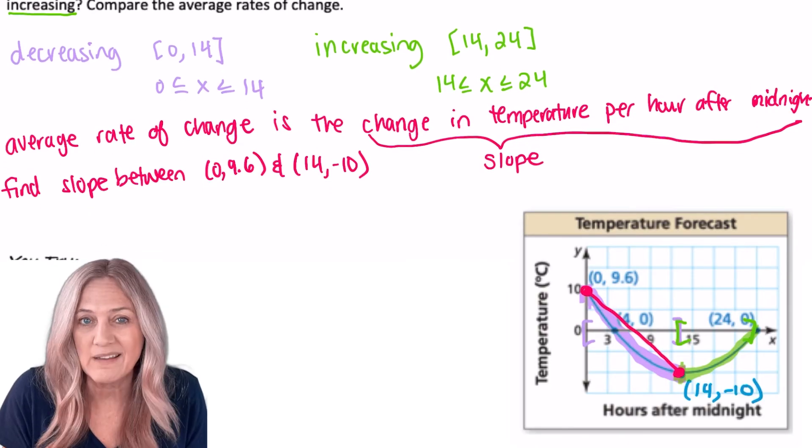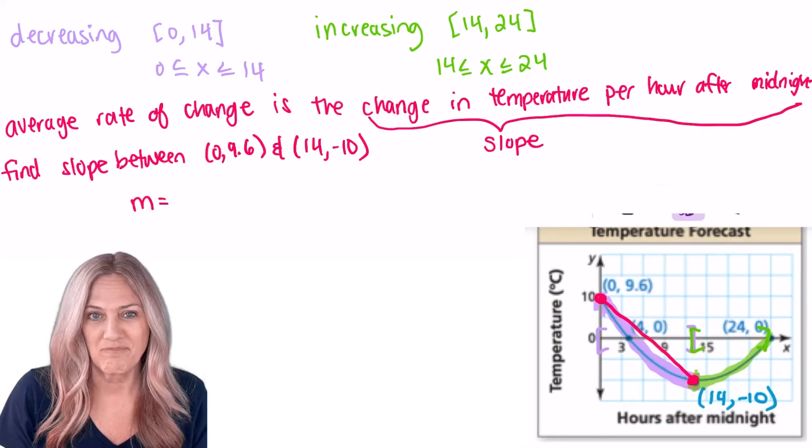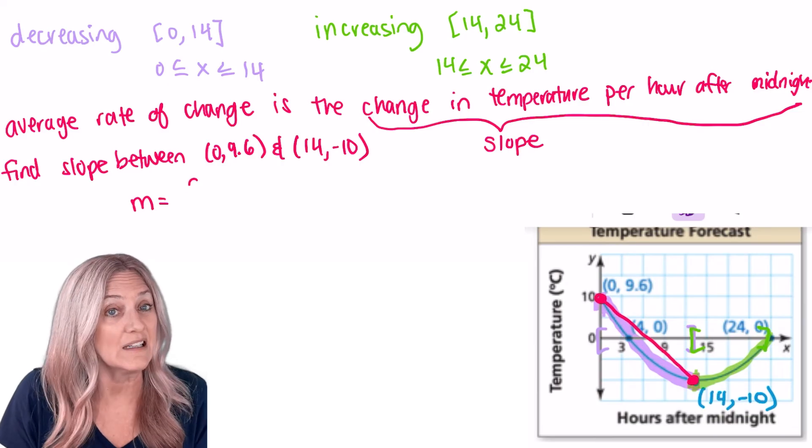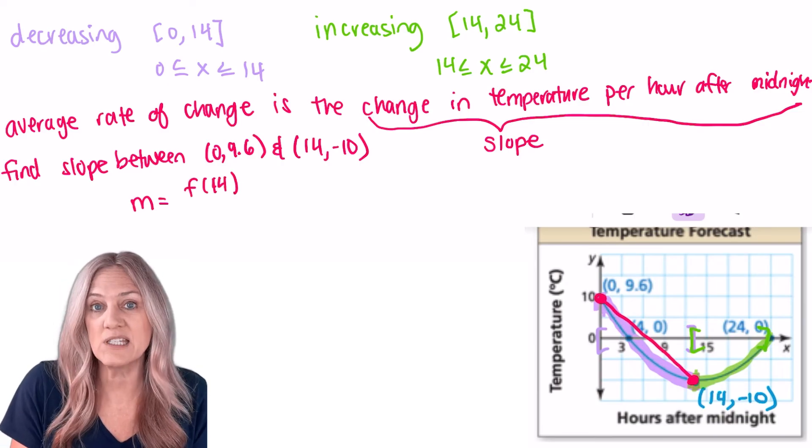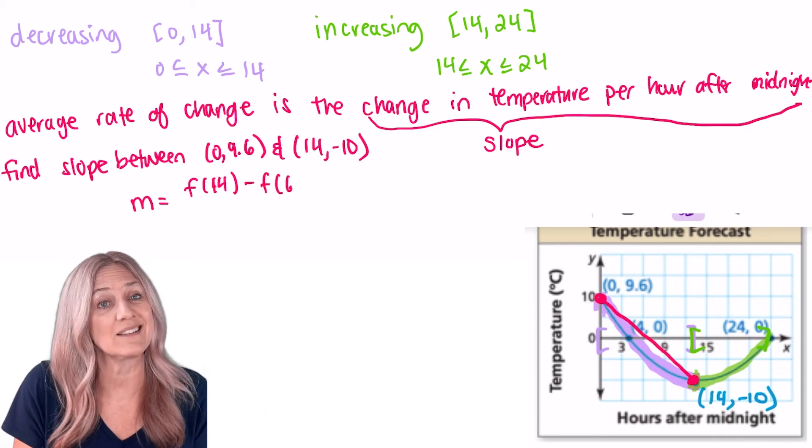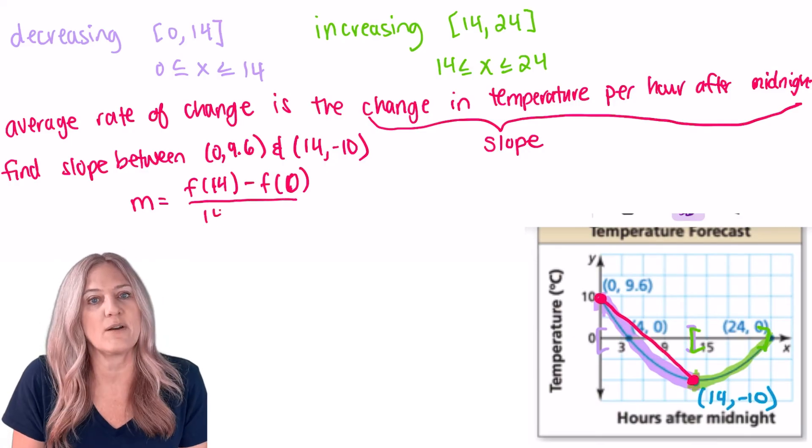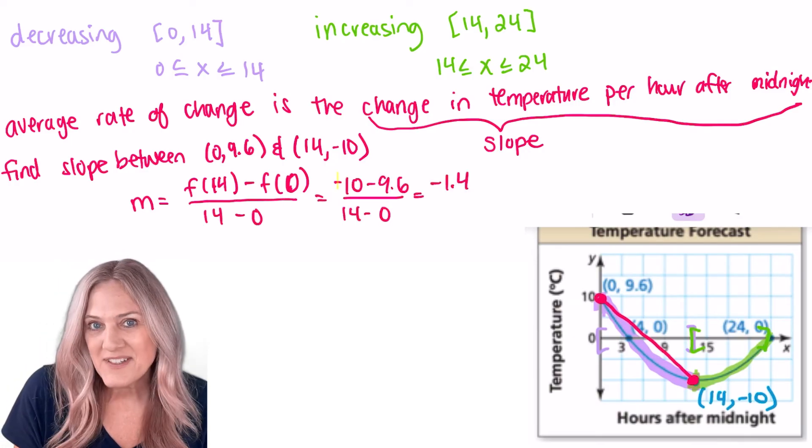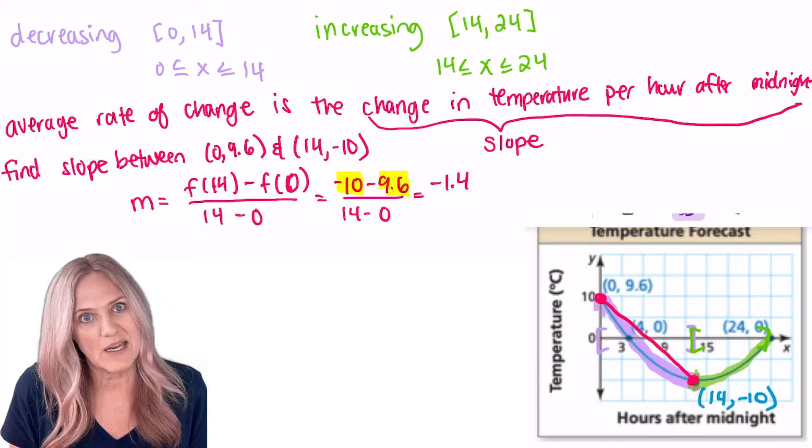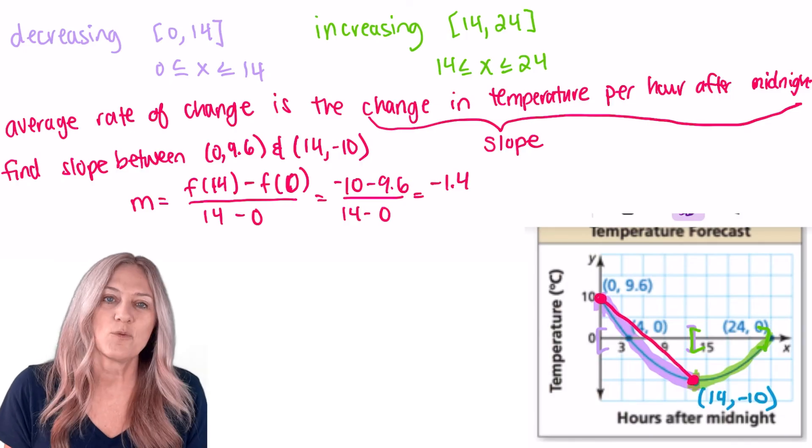Slope formula is y₂ minus y₁ divided by x₂ minus x₁. What are the points? Well, (0, 9.6) and (14, -10). For our purposes, m equals f(14). Remember, that's just the function value when x is 14 minus f(0), the function value when x is 0, divided by 14 minus 0. So f(14) is negative 10 minus f(0), 9.6, divided by 14 minus 0, 14. Our average rate of change is negative 1.4.